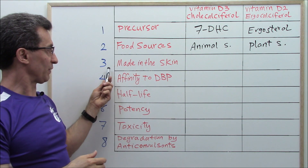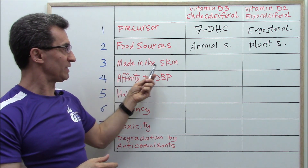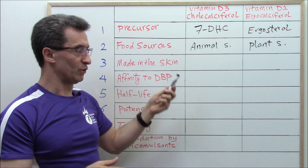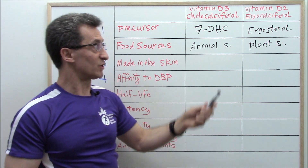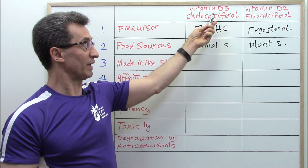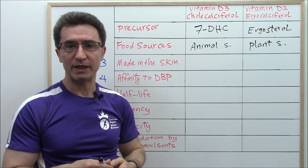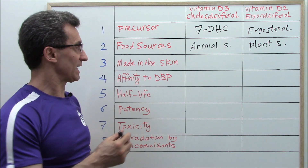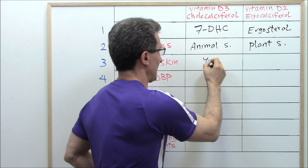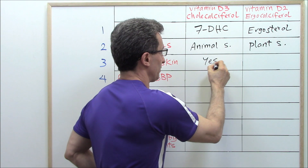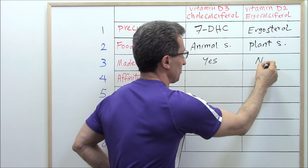Number three: the ability to be made in the skin. The vitamin D you make in the skin from the sun is vitamin D3, not D2. So vitamin D3 can be made in the skin, but vitamin D2 cannot be made in the skin.